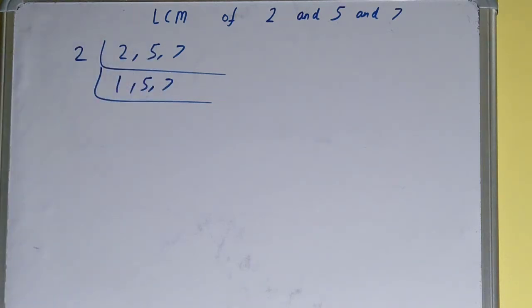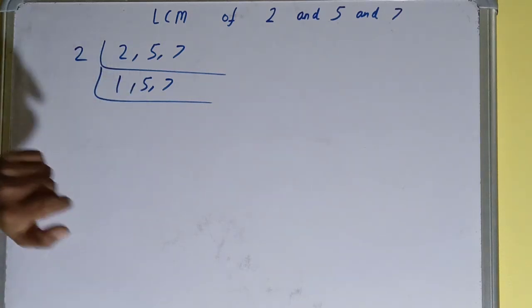So we'll go to the next lowest prime number, which is 5. And this is divisible by 5, so we'll divide it.